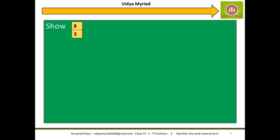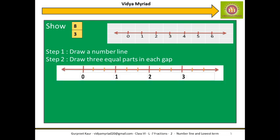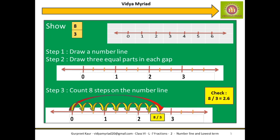Let's do another example. I have 8 by 3. Draw a number line and divide all the gaps into 3 equal parts. After this, simply count 8 steps: 1, 2, 3, 4, 5, 6, 7 and 8. So this is the place which will represent 8 by 3. I can even check it — this will be slightly more than 2.5, closer to 3.